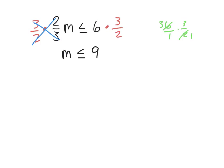So the inverse operation is to multiply both sides by the reciprocal. Our solutions: m is less than or equal to 9. That's a whole bunch of numbers, and we will represent that with a number line graph.